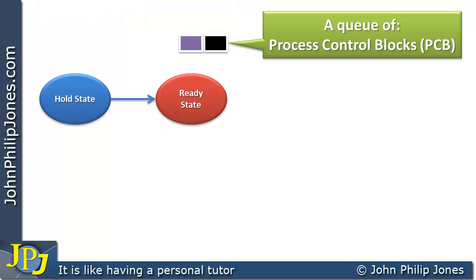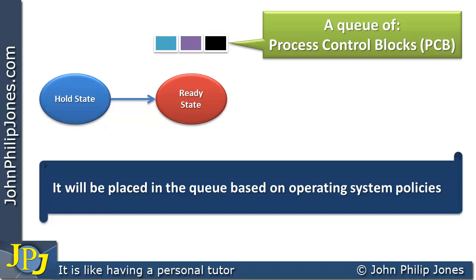They are a queue of what is called process control blocks. If we have come from the hold state to the ready state with a particular job, it will be added to this particular queue. Policies will be in place that decide which of the processes that this queue references in memory will move into the next state, as well as where things are placed upon this queue.